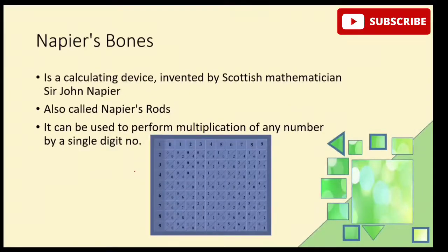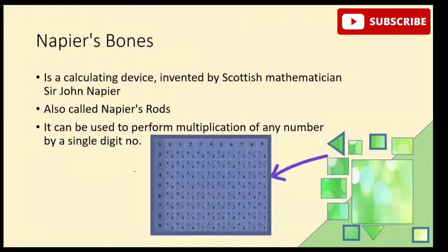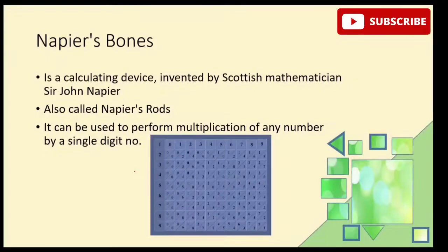After the abacus device, the next device is Napier's Bones. This is a calculating device invented by Scottish mathematician Sir John Napier. This device can be used to multiply numbers. It works with single-digit numbers; for example, to multiply 45 by 5, or to perform calculations like 67 multiplied by 58.